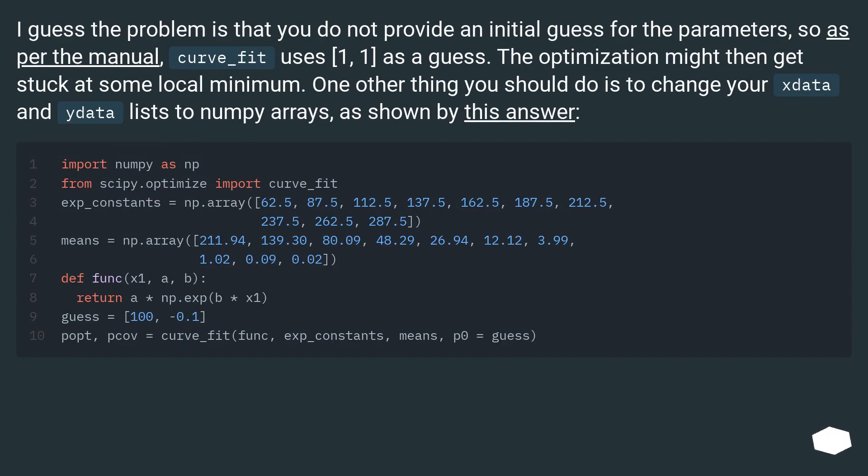I guess the problem is that you do not provide an initial guess for the parameters. So as per the manual, curve_fit uses [1,1] as a guess. The optimization might then get stuck at some local minimum. One other thing you should do is to change your xdata and ydata lists to numpy arrays, as shown by this answer.